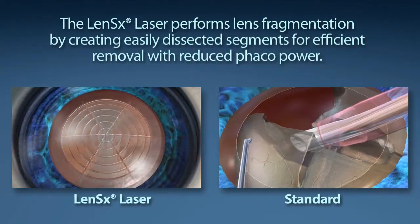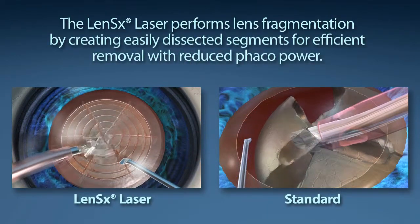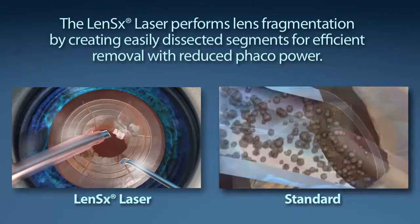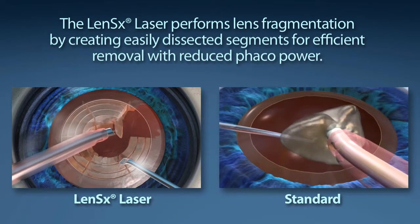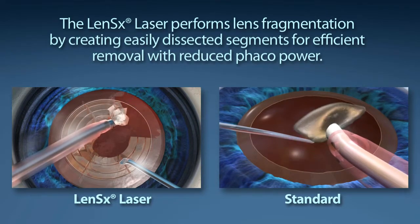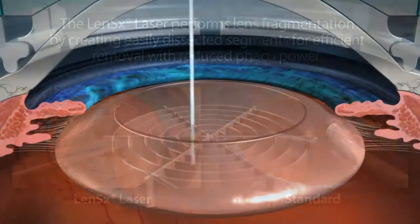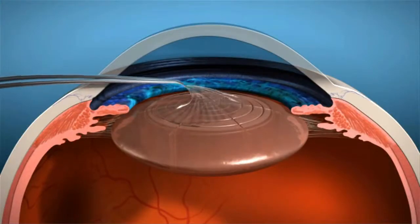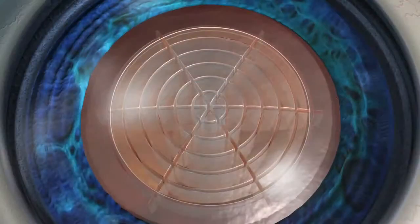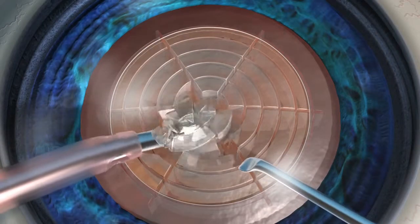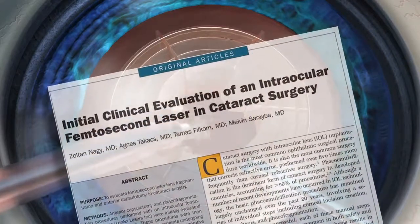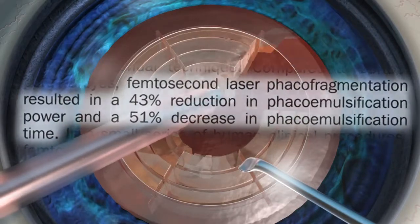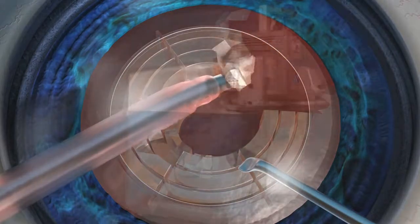Standard cataract surgery requires a phacoemulsification machine to segment and remove the content of the cataract. The goal of your surgeon is to reduce the amount of phaco energy used to remove your cataract. The LensX laser performs lens fragmentation, creating easily dissected segments for efficient removal with little or no phaco power. With the laser pulses utilized, the LensX laser provides the surgeon a 43 percent reduction in phaco power and 51 percent reduction in phaco time compared to the standard cataract procedure.